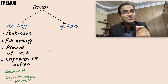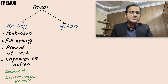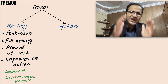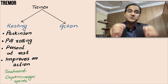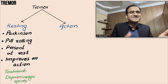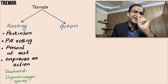The treatment of Parkinson's disease is based on the fact that there is a loss of dopamine, which causes all the movement disorders. For now, remember that dopamine is deficient in Parkinson's disease and you give dopaminergic agents. Anticholinergics are also used for the treatment of the resting tremor seen in Parkinson's disease.